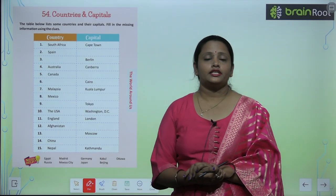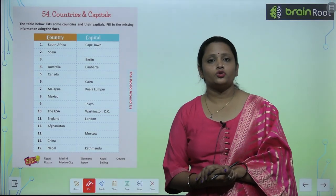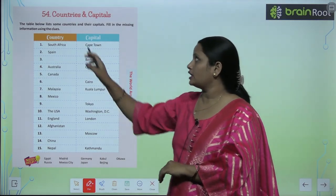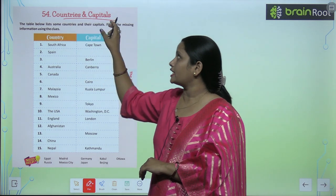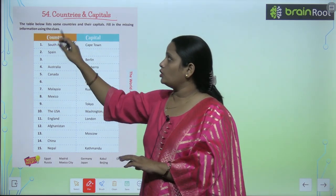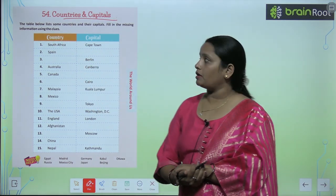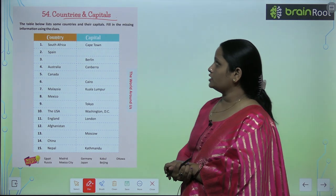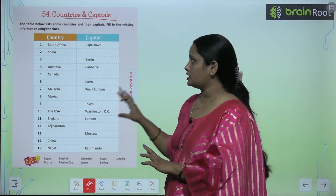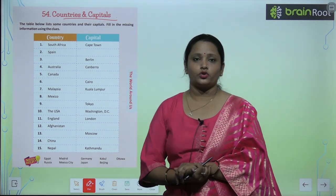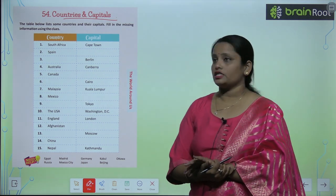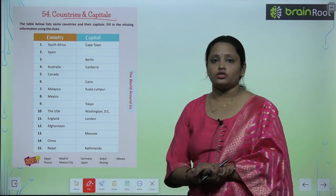Children, let's move on to chapter number 54. The name of the chapter is 'Countries and Capitals.' The table below lists some countries and their capitals. Fill in the missing information using the clues.